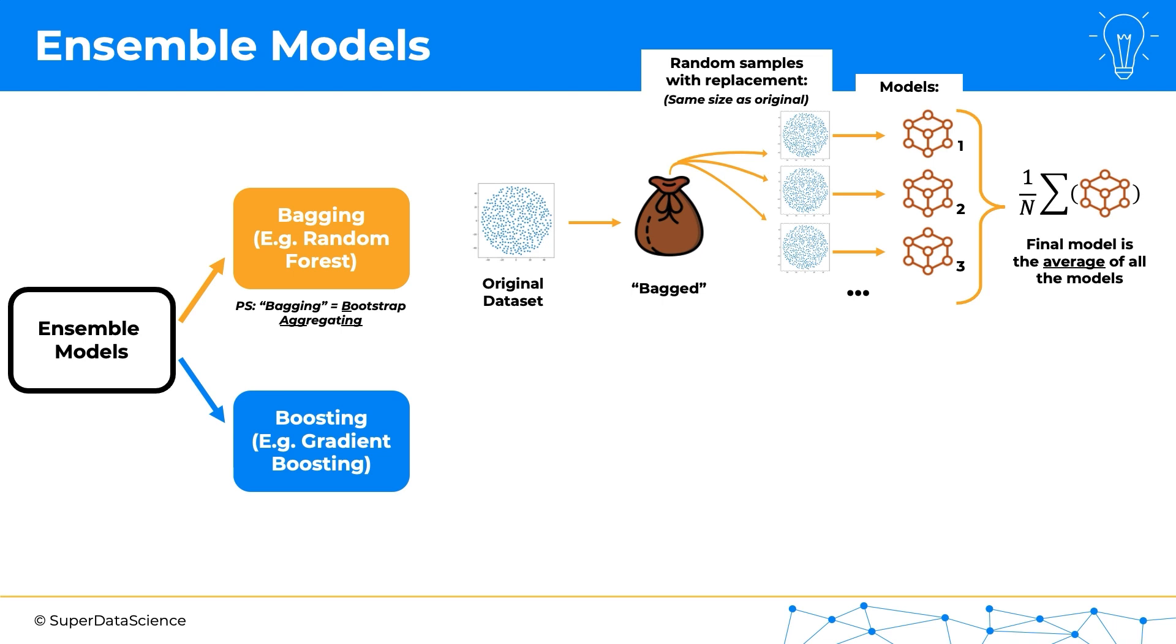Now in terms of boosting, or for instance gradient boosting, what we do is we take the original dataset. And then right away, we don't do any bagging, we just build a model from that dataset. And in most cases, the first model is a very simple model, as we'll see in upcoming tutorials, just a simple average of all the data. But we'll talk more about that in upcoming tutorials.